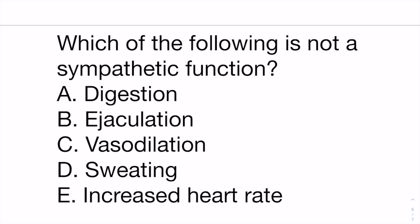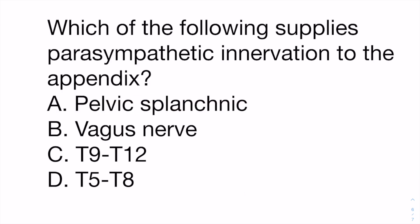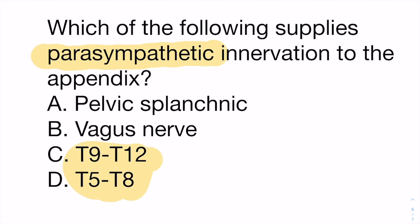Which of the following is not a sympathetic function? Remember, sympathetic is fight or flight — why would we need digestion when running away from a dog? Which of the following supplies parasympathetic innervation to the appendix? The answer is vagus nerve. The thoracic region does not do parasympathetics — that is all sympathetics. If you get a question asking about parasympathetics and they give you anything other than cranial, sacral locations, vagus nerve, or pelvic splanchnic nerve, those answers are wrong — you can automatically cross those out.